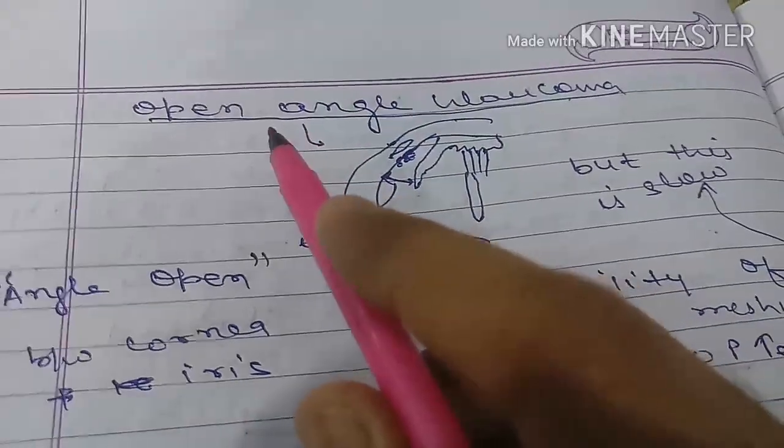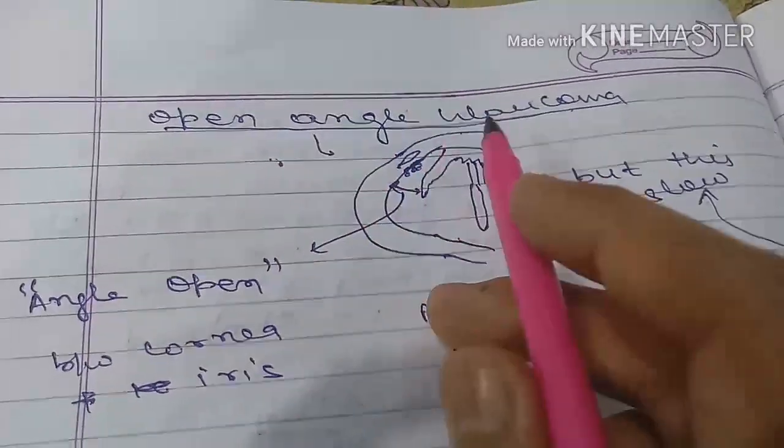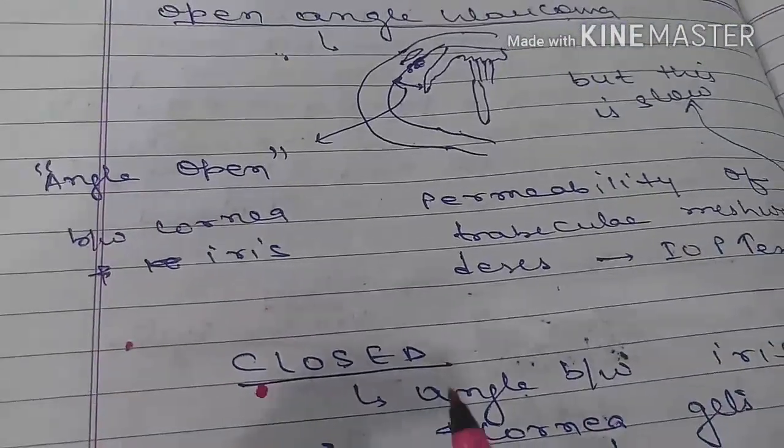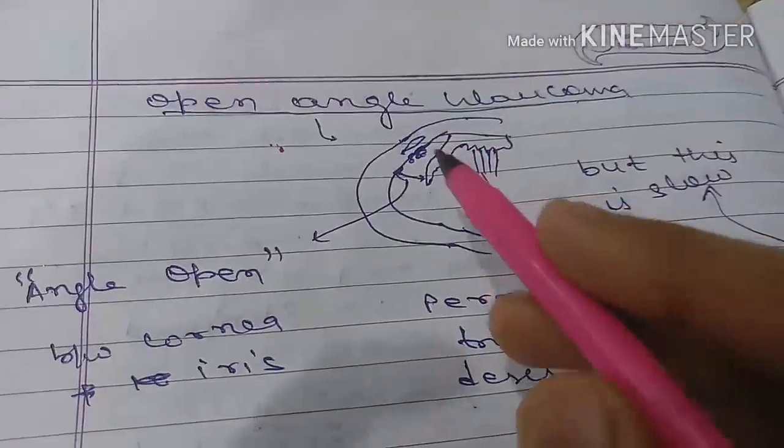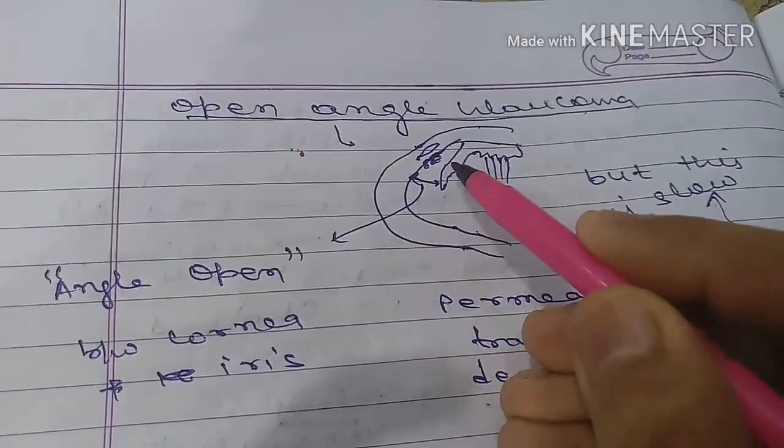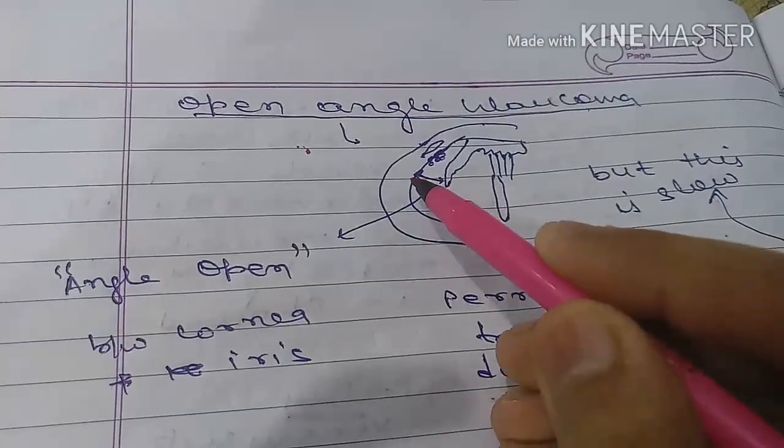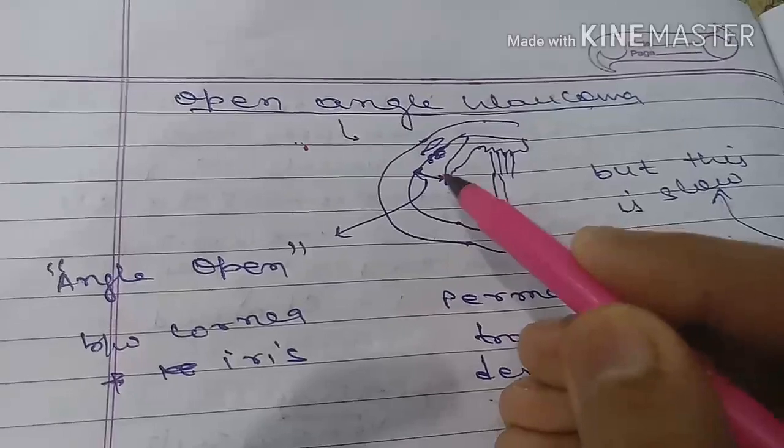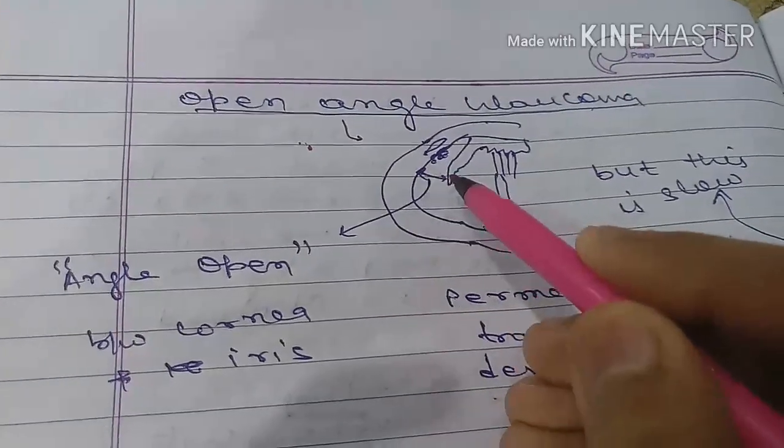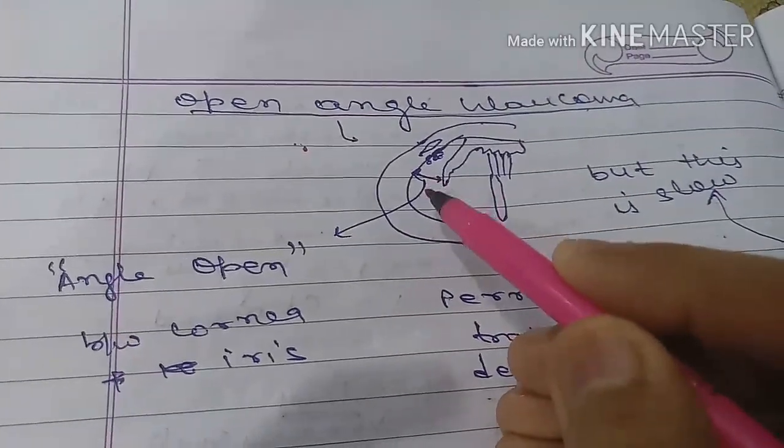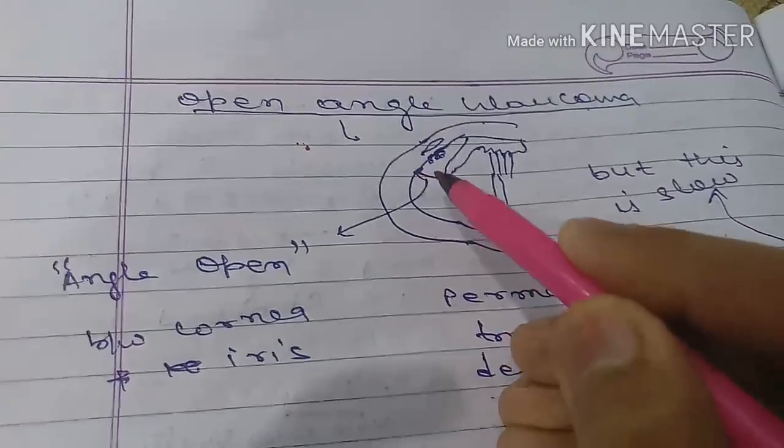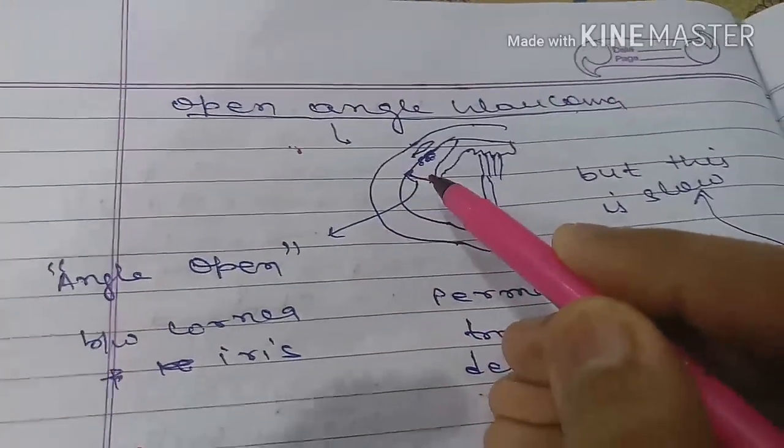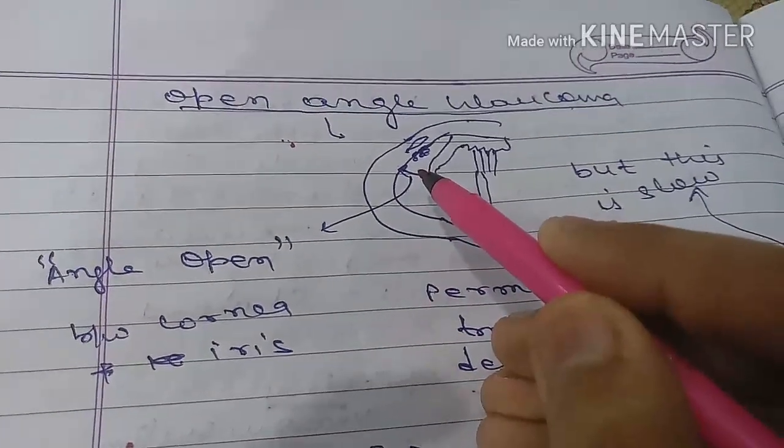One is open angle glaucoma and the other is closed angle glaucoma. This is the iris and this is the cornea. The angle between iris and cornea is open here. This is the open space between iris and cornea, so this is open angle glaucoma.